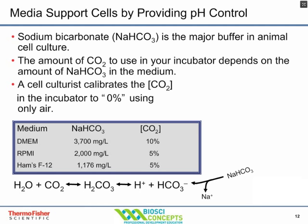If you're growing cells in a 10% CO2 incubator, the CO2 concentration is 10% higher than what's in the atmosphere. This means that if you remove your cells from the incubator, put them on the microscope or in the biological safety cabinet, the pH of that media will increase due to lower CO2. This is why if you leave your cell culture dish or flask out of the incubator for a period of time, if it has phenol red, it turns purple.